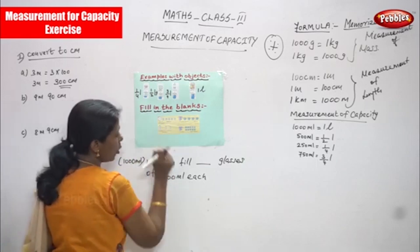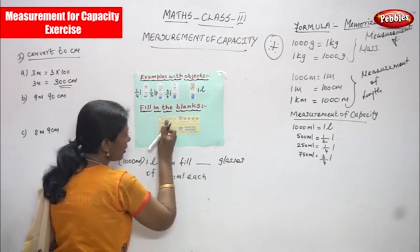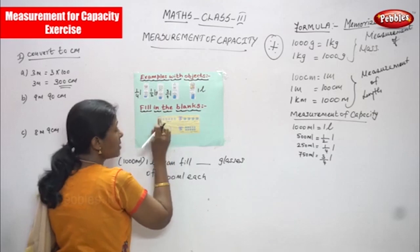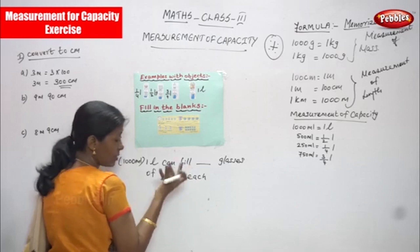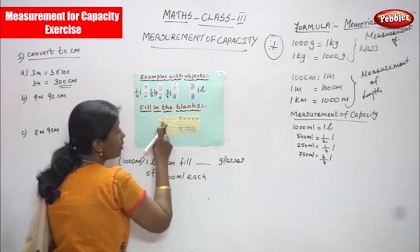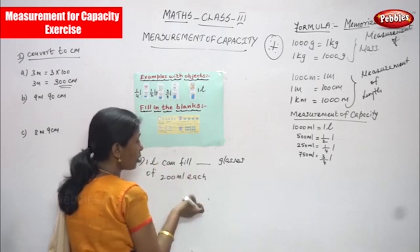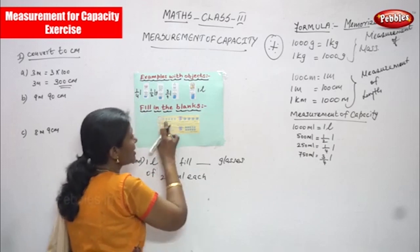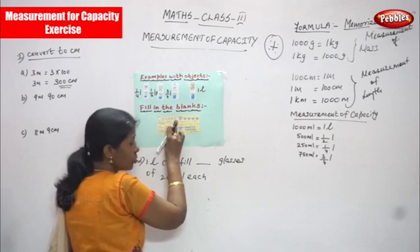That means how many glasses? So: one glass, two glass, three glass, four glass, five glass. Each glass fill how much? 200 ml of milk or water filled in each glass. First glass 200 ml, second glass also 200 ml, third glass also 200 ml, fourth glass also 200 ml, and fifth glass also 200 ml.